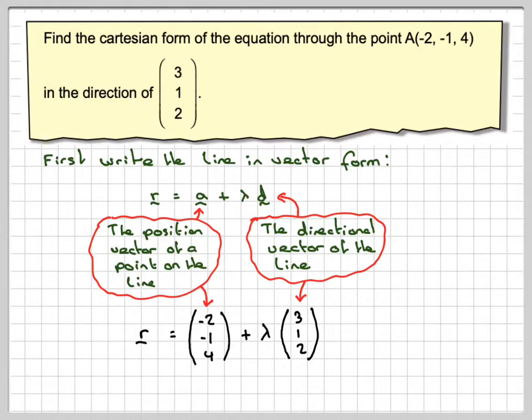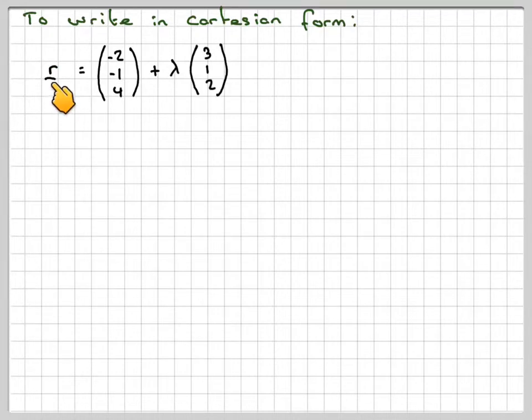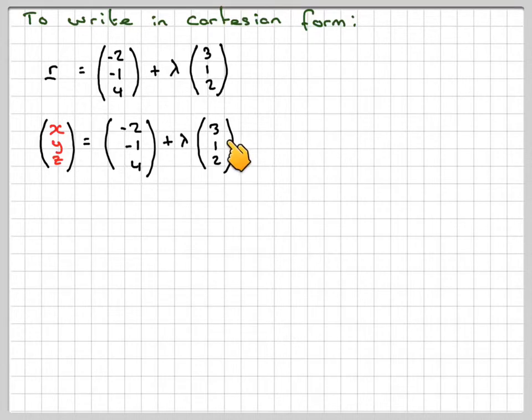How do we now find the Cartesian equation? Well, R—this R here—means the general point on the line. So R just stands for (X, Y, Z). So what we've got is (X, Y, Z) equals (-2, -1, 4) plus lambda(3, 1, 2).